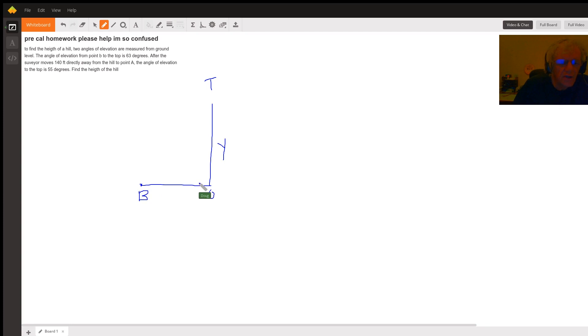The angle of elevation from B to the top of the hill is 68 degrees. Then we're told that the surveyor moves 140 feet directly away from the hill to point A, and the angle of elevation from A to the top of the hill is 55 degrees.